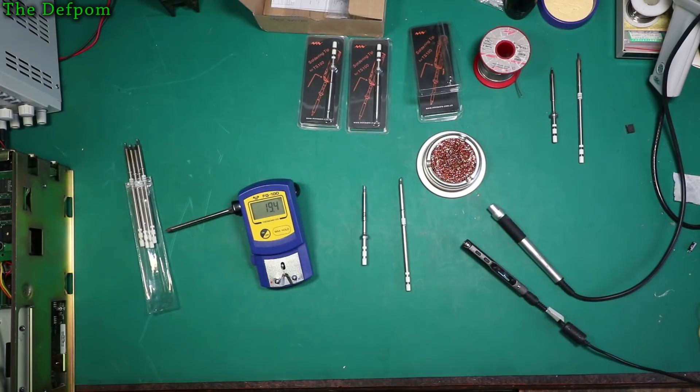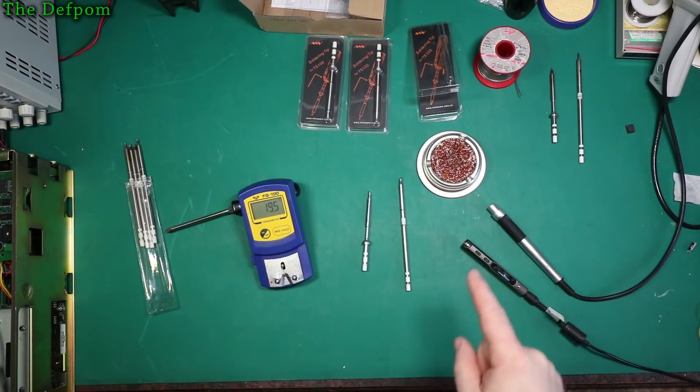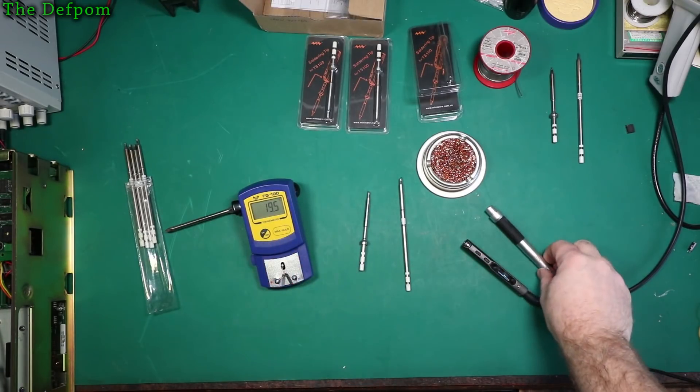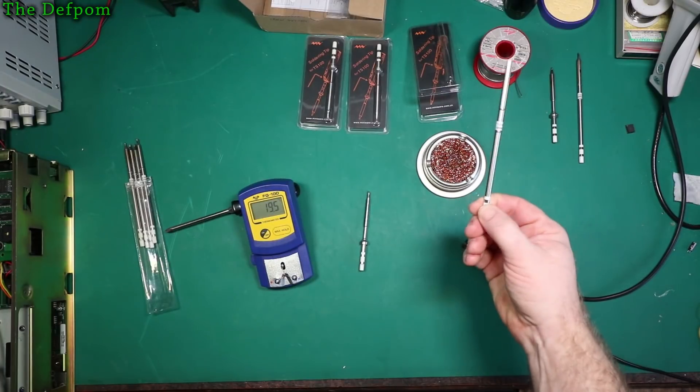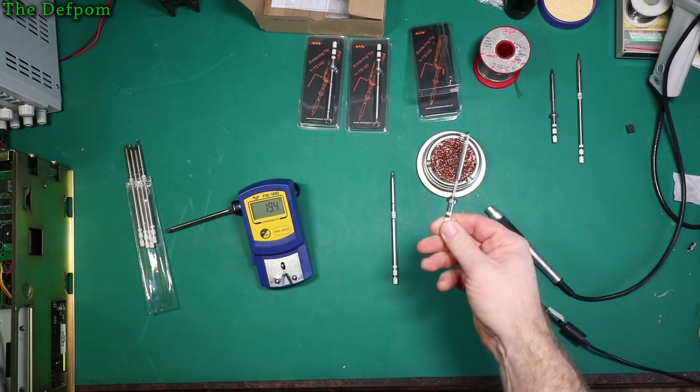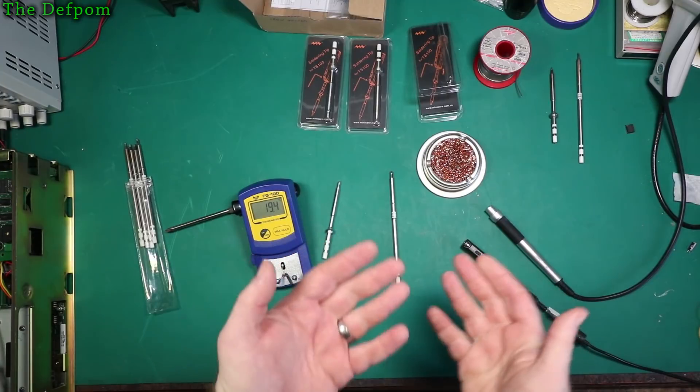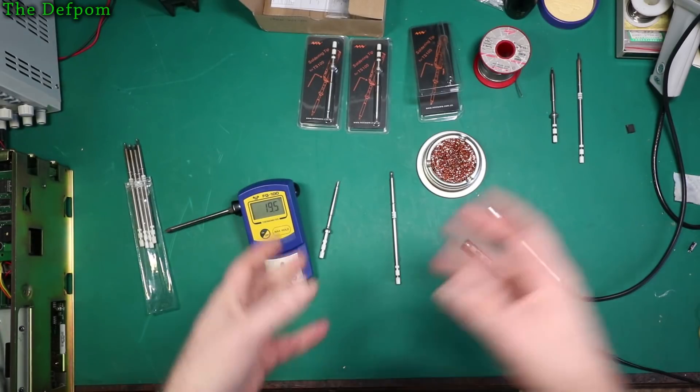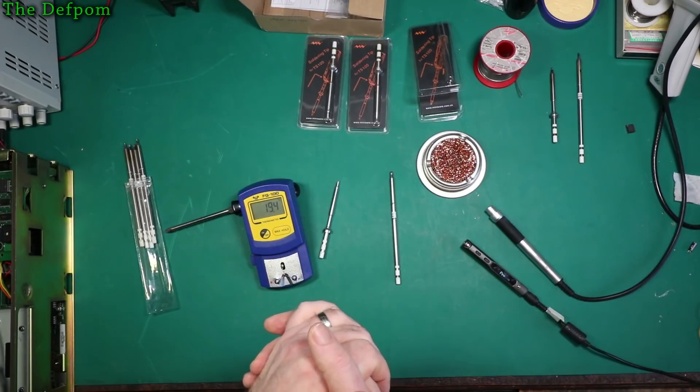I watched a video today from him checking out the TS100, the accuracy of the tip, versus what he was actually trying to do was to check a T12 tip against the TS100 tips and compare the heat-up rates to see how quick they are. He's using an ESP32 iron, a Chinese soldering station.